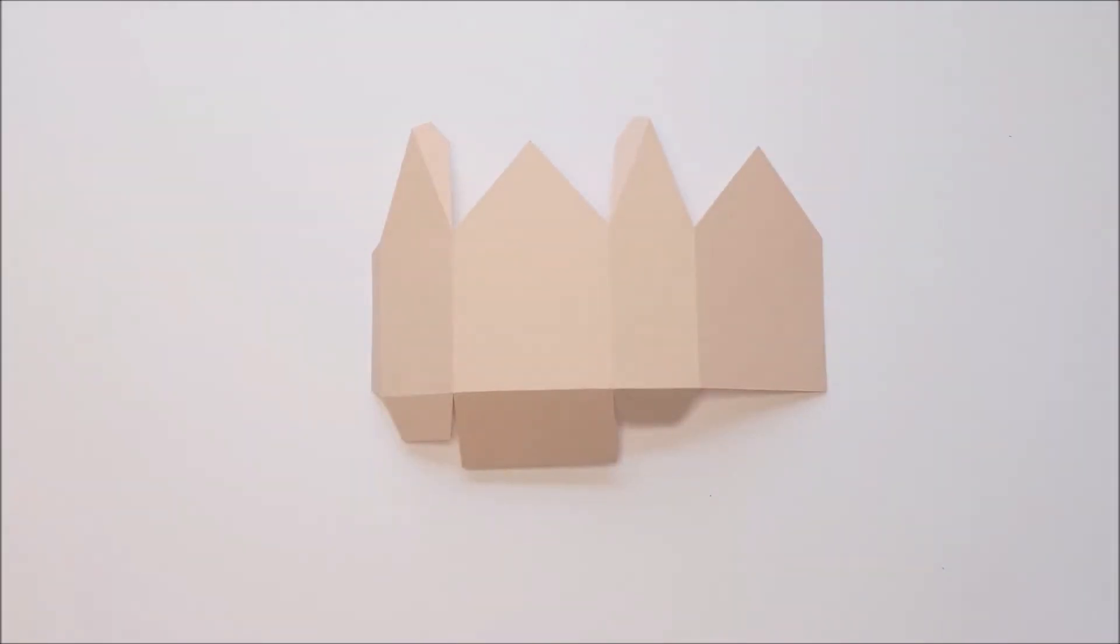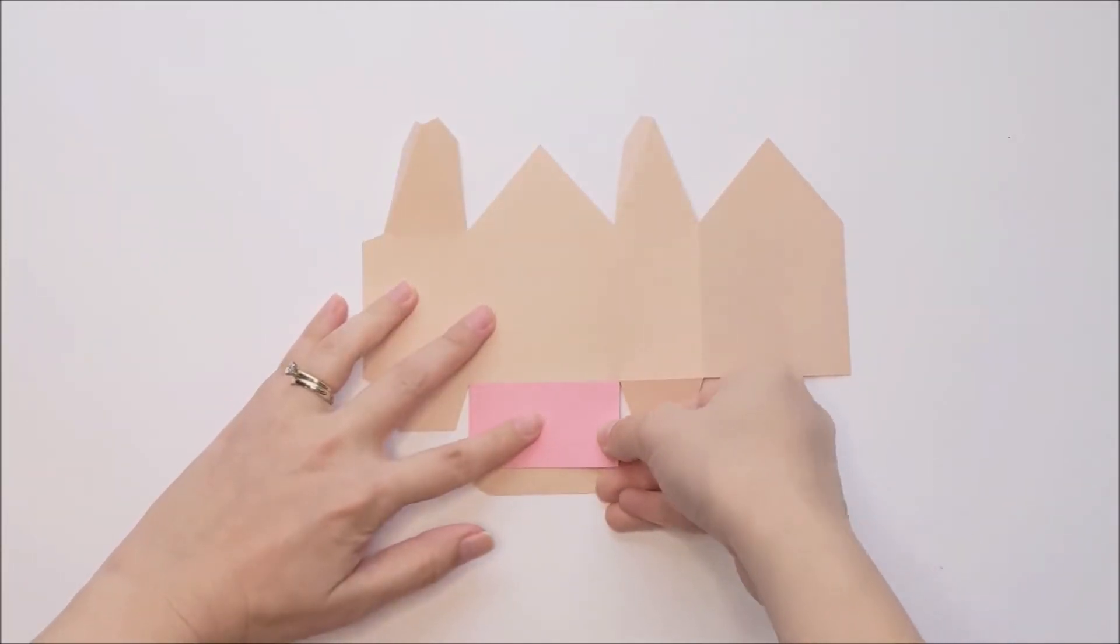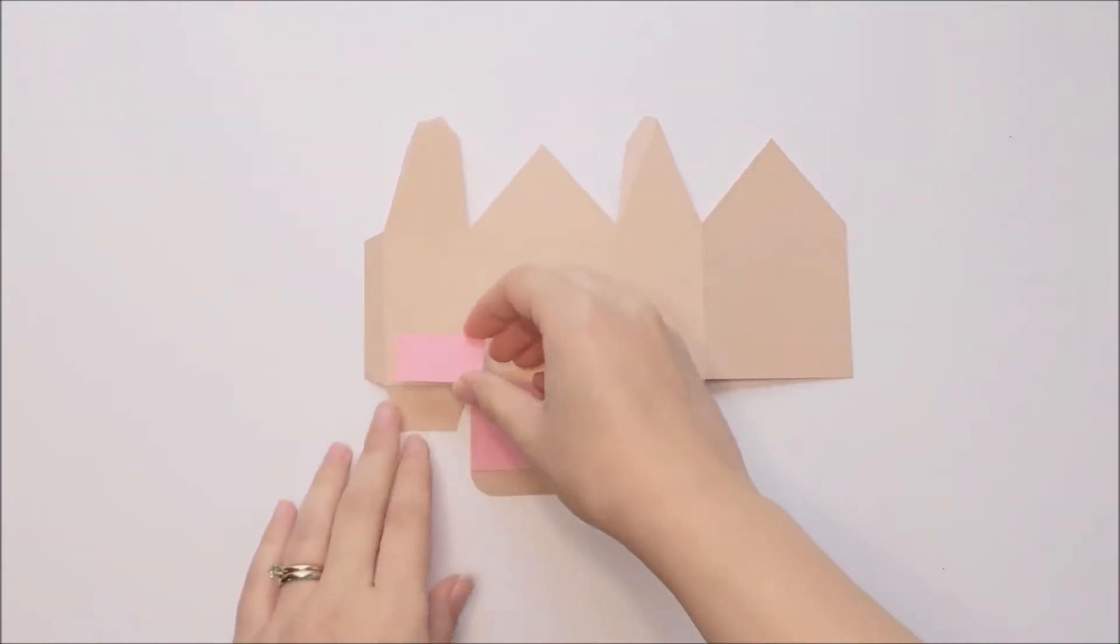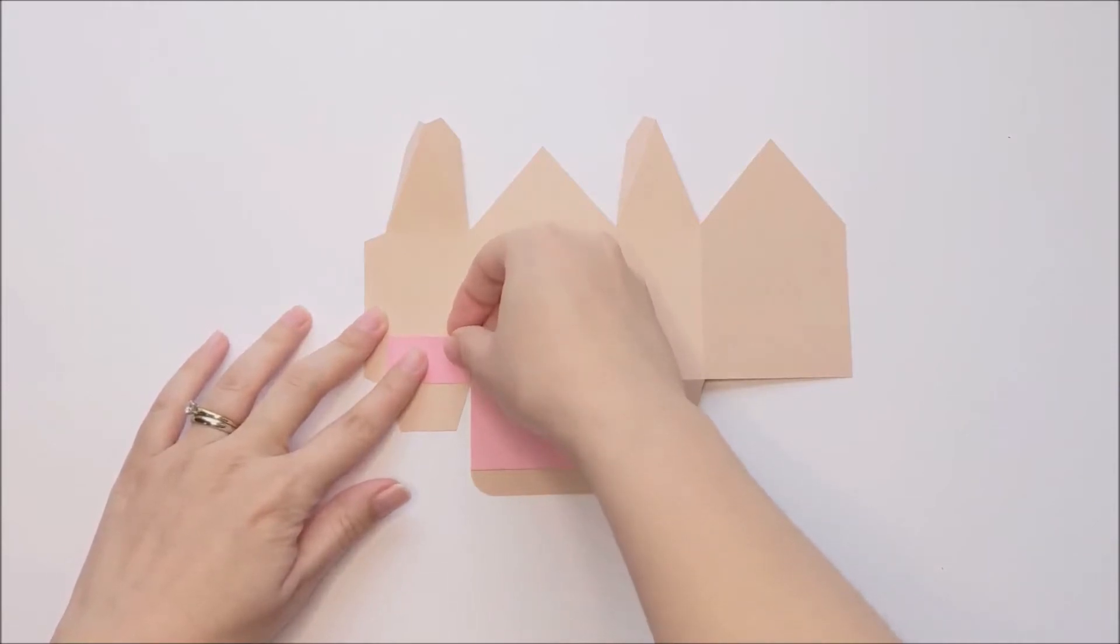Next, you're going to glue your eraser pieces to the bottom. And when you're gluing those down, just make sure you're staying within the score lines for each section of the box.